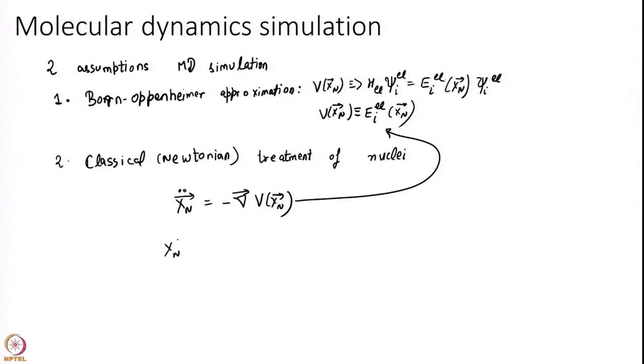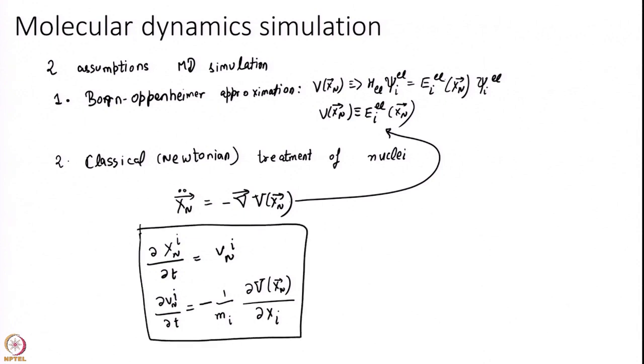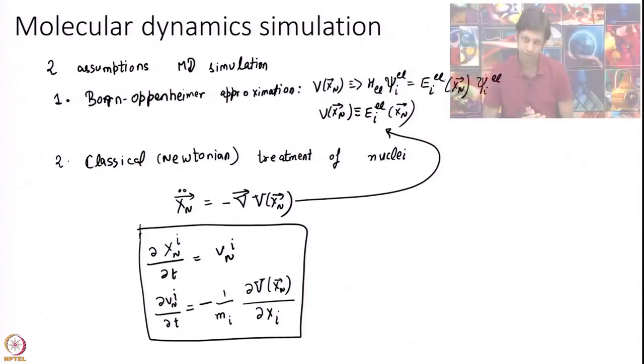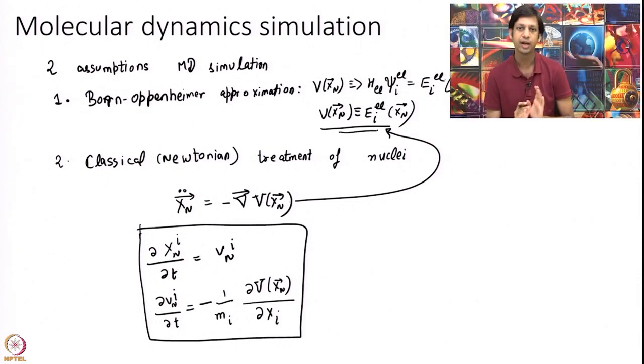So if I write this more clearly, del Xi over del T is Vni, and del Vni over del T equal to minus 1 over M del V over del Xn. So this is what is called Newton's laws that we have seen in this course. Derivative of position is velocity, and derivative of velocity is my acceleration, which is nothing but minus derivative of potential with respect to position. That is Newton's laws, f equal to ma, nothing more. So we want to use these laws with this potential energy to run my dynamics.